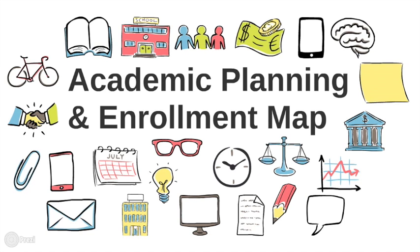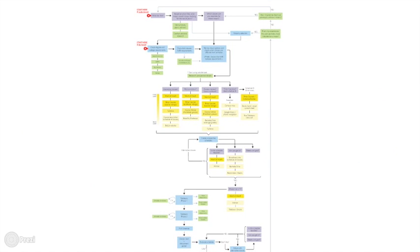So let's walk through the academic planning and enrollment map. This is an archetype map that brings together the experiences that students go through each semester when deciding what classes to take.